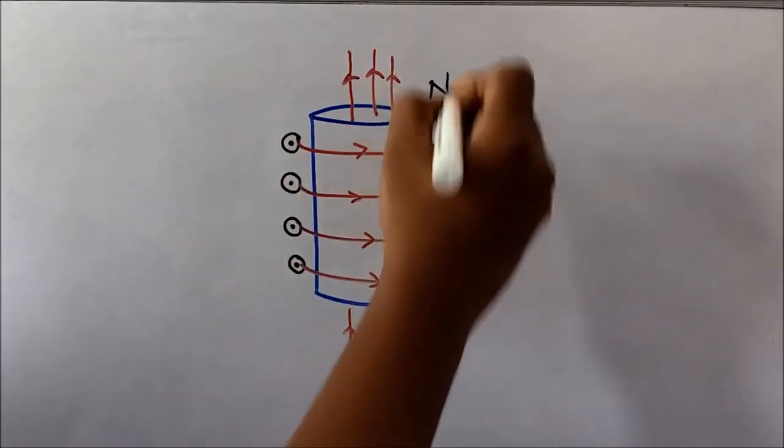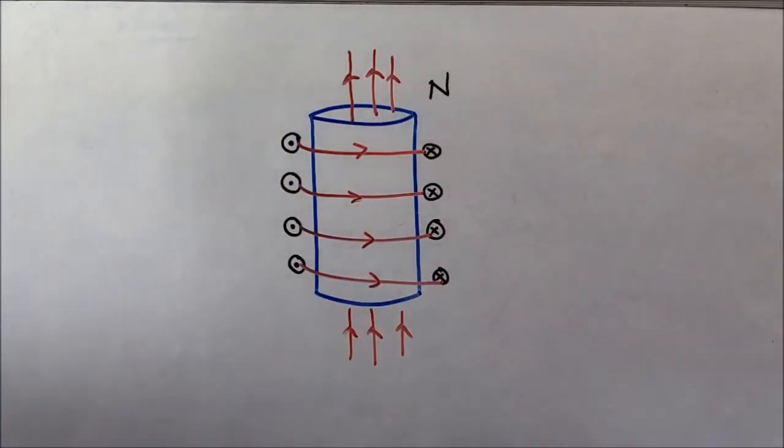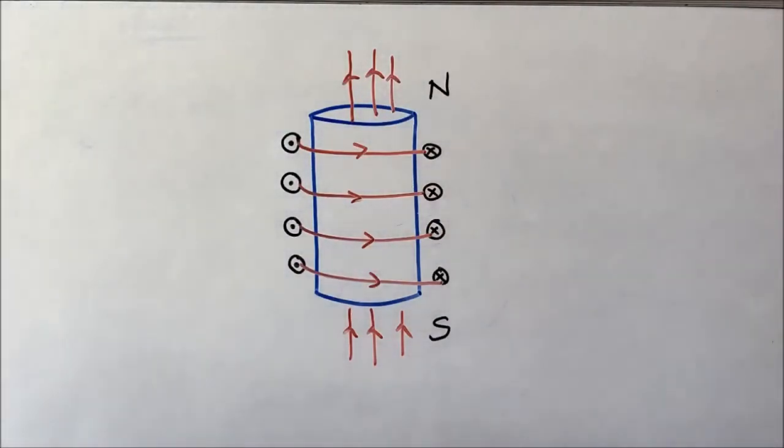They come out from North Pole and magnetic field lines enter South Pole. So the upper part is the North Pole and the lower part is South Pole. I hope you have understood this.